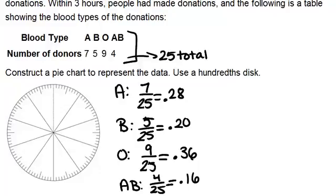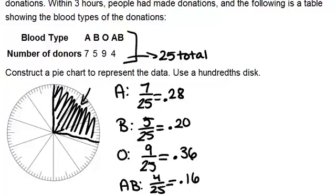For blood type A, we want to find 28 percent of our circle. So these are broken into sections of 10 percent. So here would be 10 percent, 20 percent, and we want to go over to 28 percent. So all of this is blood type A.